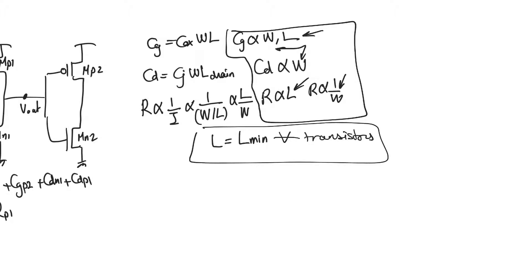When we are told that W/L — the aspect ratio of a transistor — equals, say, 6, this doesn't just tell us the transistor is 6 times as wide as it is long. It also tells us what W and L are, because we can assume without being told that L equals L_minimum, and therefore W equals 6·L_minimum. So the aspect ratio tells us everything about the size of the transistor.